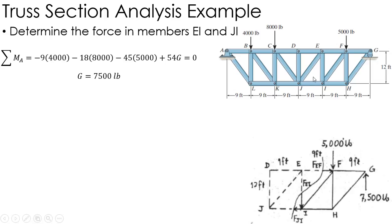That makes sense because I needed EI. So they made this cut right here. I've got my 5000 pound external load, the 7500 pound reaction that I just found at G, and another 5000 pound load.